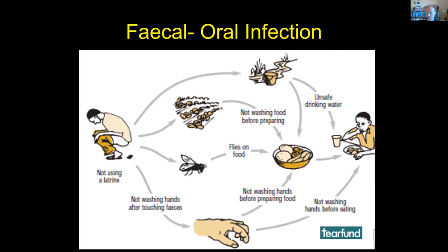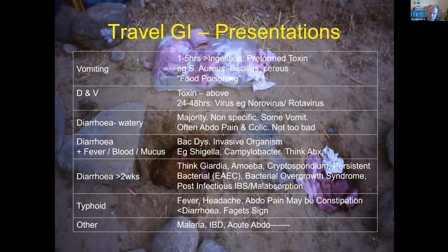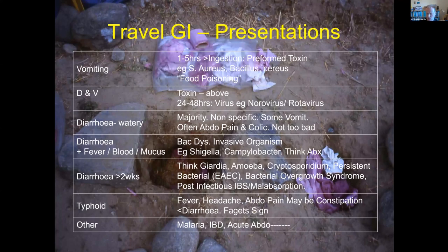Why do you get diarrhea? These organisms inhabit the guts of animals or people and end up in your mouth, usually because of poor hygiene — not washing hands after defecation, not washing hands before eating or preparing food, contamination of water supplies, and in some parts of the world the custom of using human faeces as fertilizer — so-called night soil — which contaminates food substances. If not prepared properly, that leads on to diarrhea. Many cases are just watery diarrhea, not specific, maybe some nausea, a little vomiting, abdominal pain — not too bad, most people can cope with it.